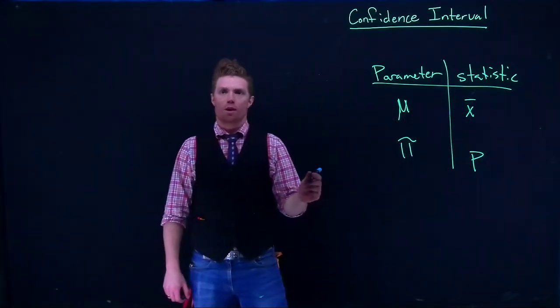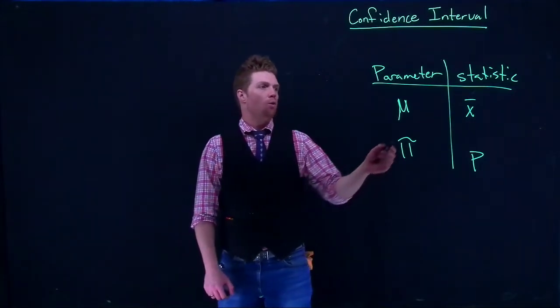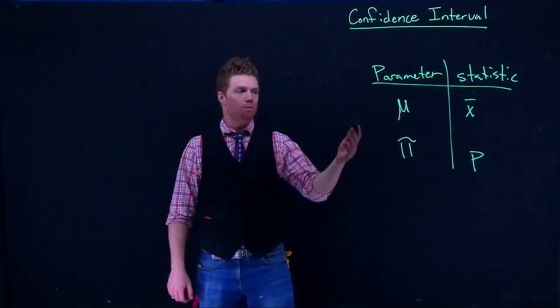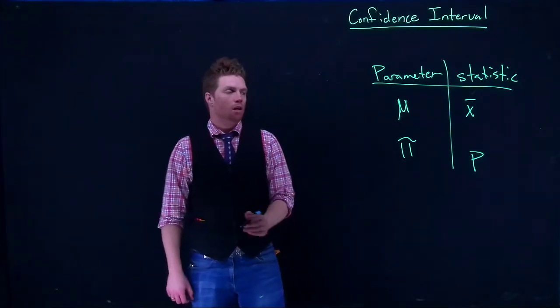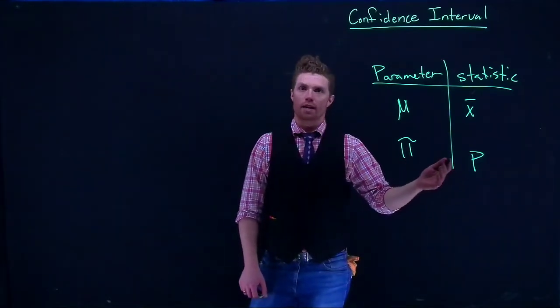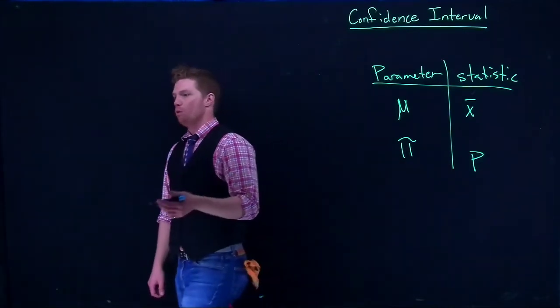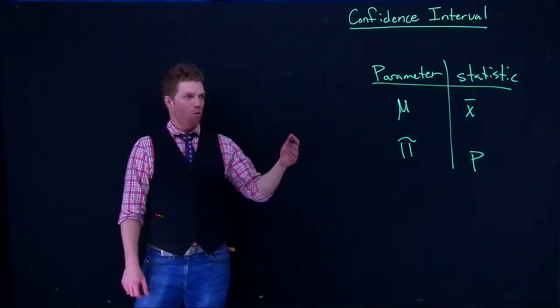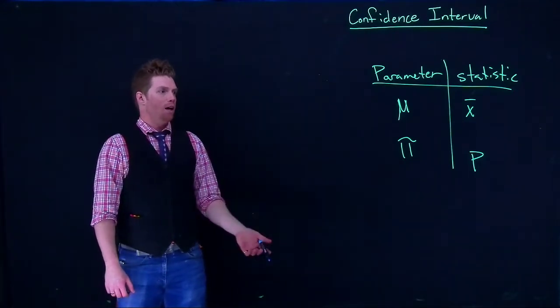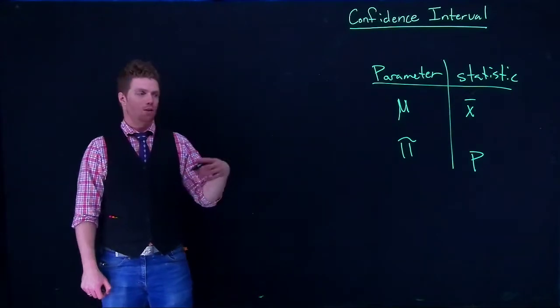With that information, we're able to make some estimation on where we think that the true mean or the true proportion lies. So if we're dealing with categorical data, we're dealing with the true proportion of people who are redhead or the true proportion of people who approve of a political candidate.